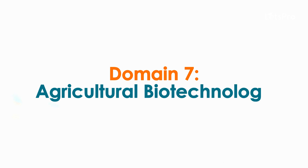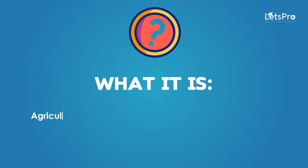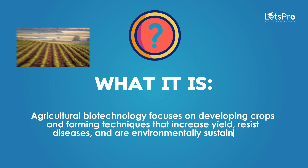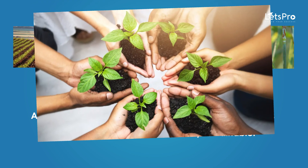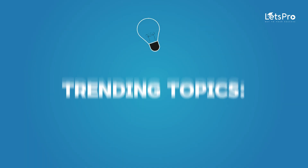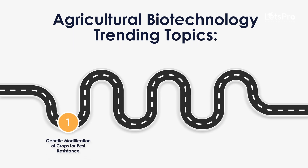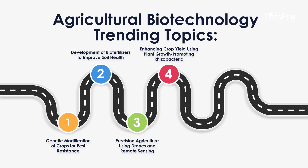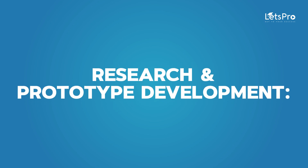Domain 7: Agricultural Biotechnology. Agricultural biotechnology focuses on developing crops and farming techniques that increase yield, resist diseases, and are environmentally sustainable. Trending topics include genetic modification of crops for pest resistance, development of bio-fertilizers to improve soil health, precision agriculture using drones and remote sensing, enhancing crop yield using plant growth-promoting rhizobacteria, and hydroponic systems for urban farming.